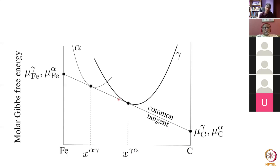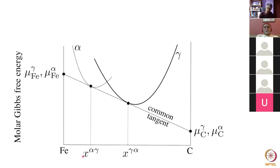If we look at a graph with the free energy curves of alpha (ferrite) and gamma (austenite), and if they share a common tangent, then the chemical potential of carbon in gamma is exactly the same as the chemical potential of carbon in alpha, and the chemical potential of iron in gamma is the same as in alpha. Even if these two phases have a different chemical composition — these are the equilibrium compositions of ferrite and austenite — there is no tendency whatsoever for the composition to homogenize.